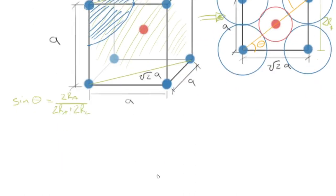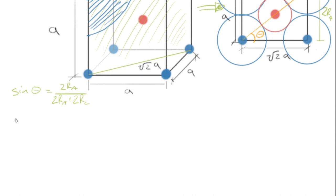Cancel out those pesky little twos. And just give myself a little bit more room here. And we'll have that RA sine theta plus RC sine theta equals RA.